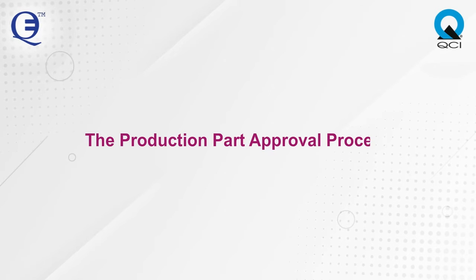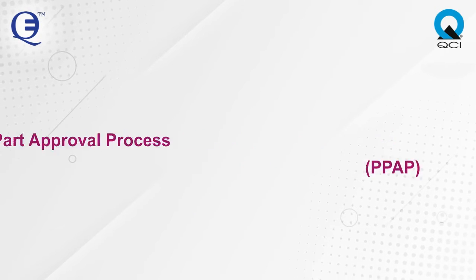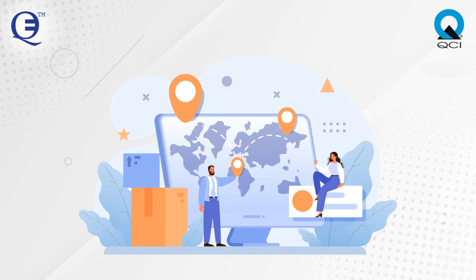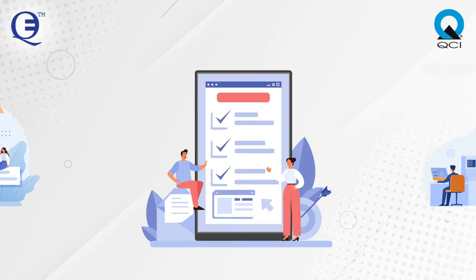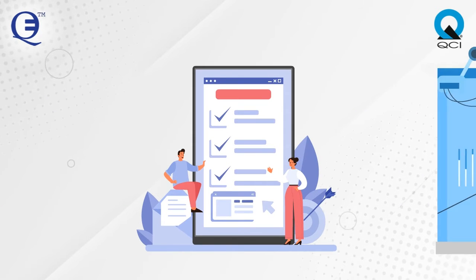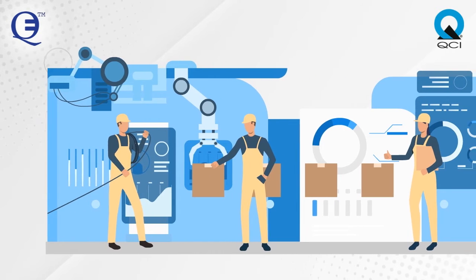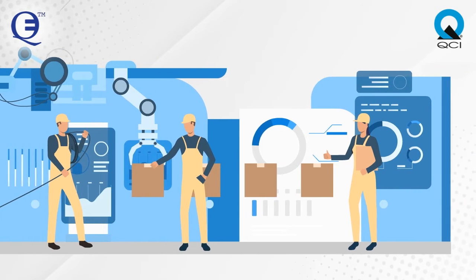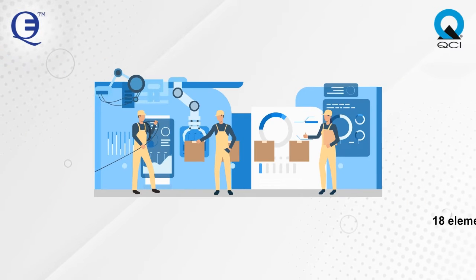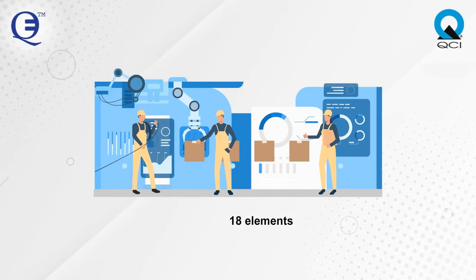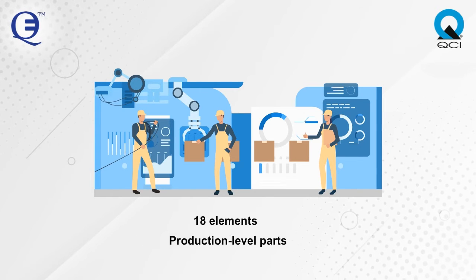The Production Part Approval Process, PPAP, is a valuable tool for establishing confidence in component suppliers and their production processes. It defines the approval process for a new or revised part or parts produced from new or significantly revised production methods. The PPAP process consists of 18 elements that may be required for the approval of production level parts.